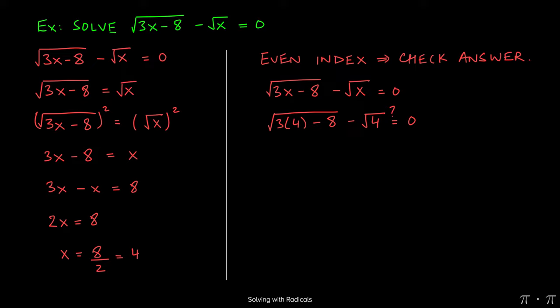On the left-hand side, 3 times 4 gives us 12. 12 minus the 8 gives us 4. And here we're left with square root of 4 minus square root of 4 equals 0.